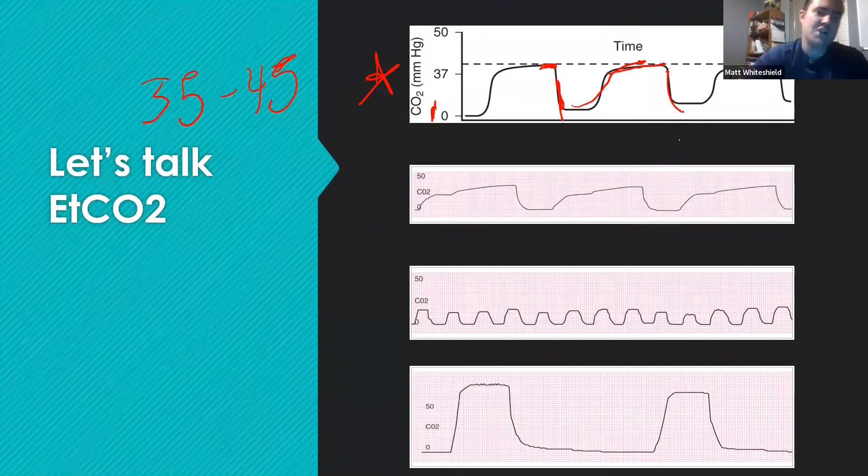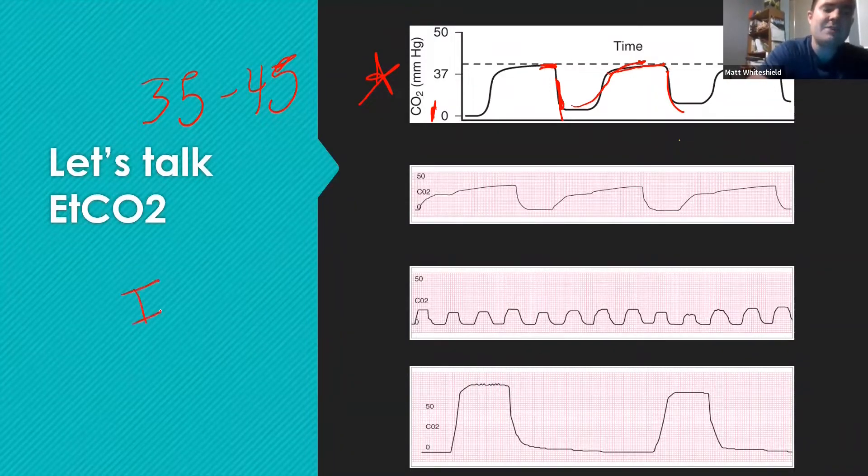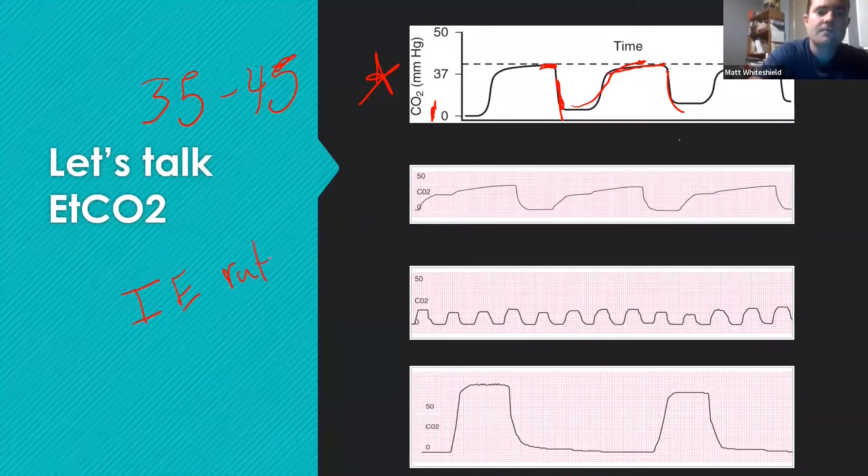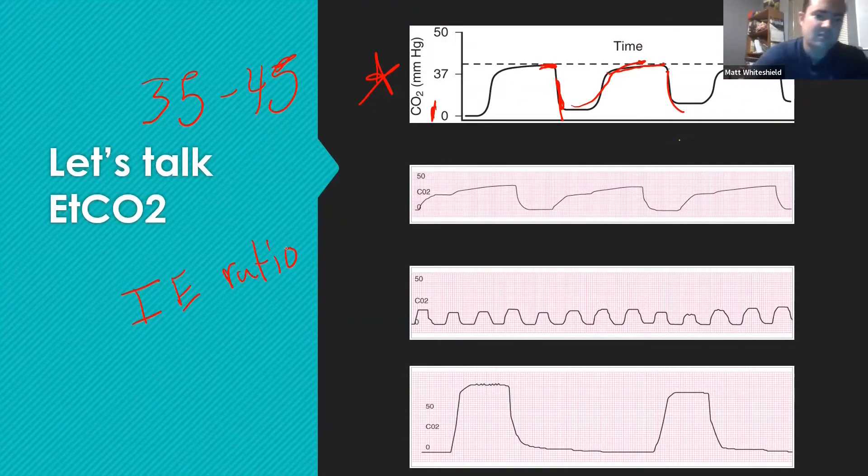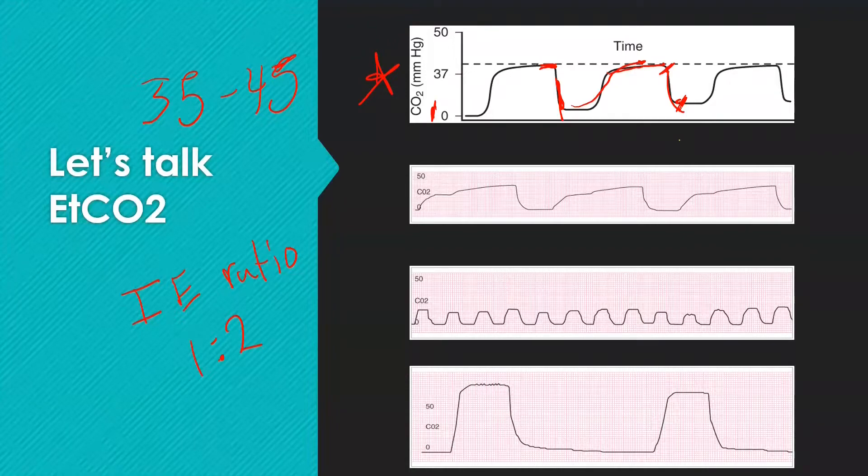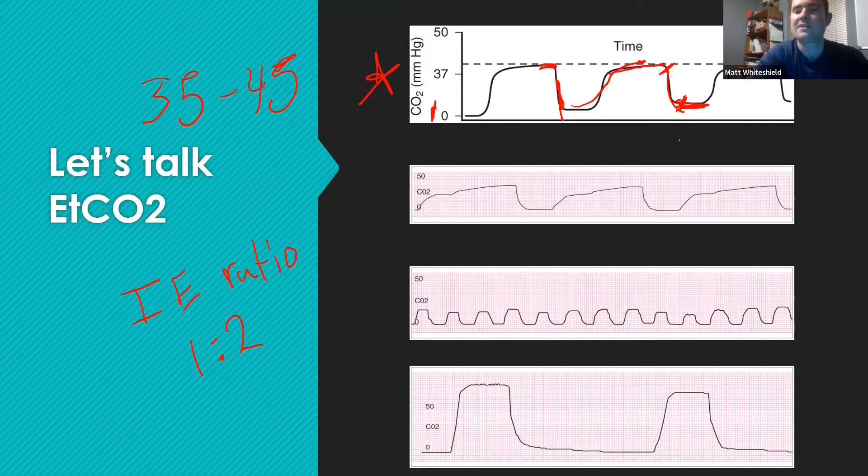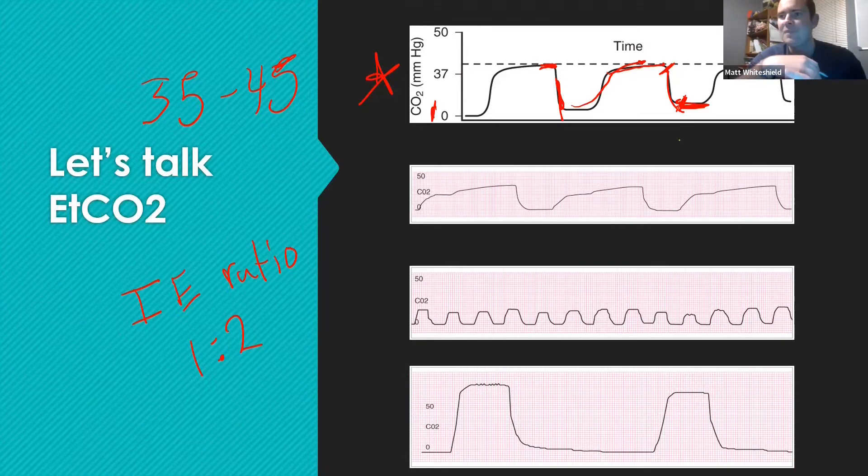This shows me my IE ratio. If you remember that IE ratio, it's telling you my inspiration to exhalation ratio. Normal IE ratio is one to two. My inhalation, which is this mark to basically here, I inhale. My exhalation should be twice as long. This little plateau here at the bottom, that's our dead space, time that we're basically waiting to breathe again. Then we exhale all that carbon dioxide. So IE ratio should be one to two.